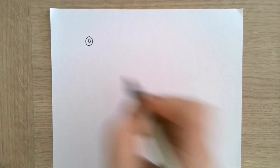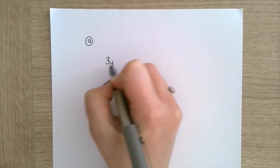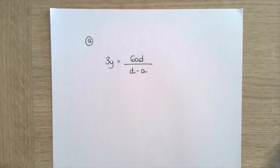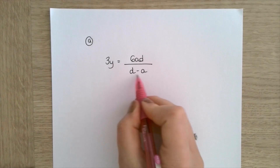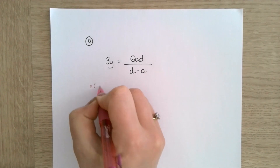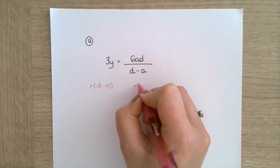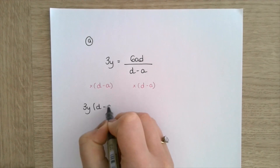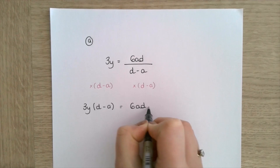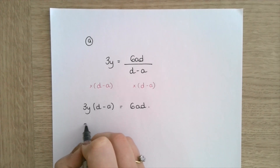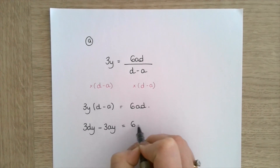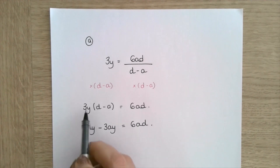For this one I'm going to make a the subject of the formula 3y equals 6ad all over d minus a. First of all I'm going to multiply both sides by my denominator, so multiply by d minus a on both sides, which leaves me with 3y brackets d minus a equals 6ad. I'm then going to expand these brackets so I get 3dy minus 3ay equals 6ad.